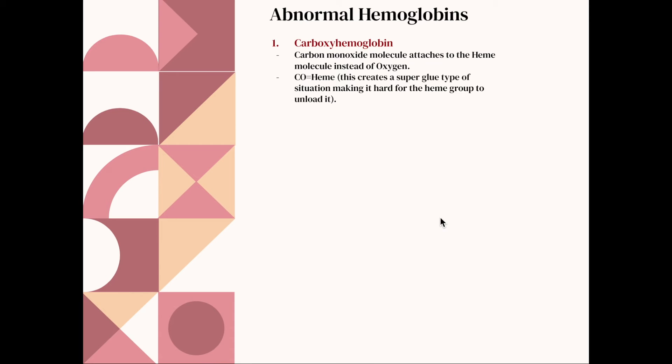So next slide, we're going to talk about abnormal hemoglobins and why your curve shifts to the left. So let's talk about carboxyhemoglobin first. So carboxyhemoglobin is when carbon monoxide attaches to your hemoglobin molecule instead of an oxygen molecule. So a CO into your heme.